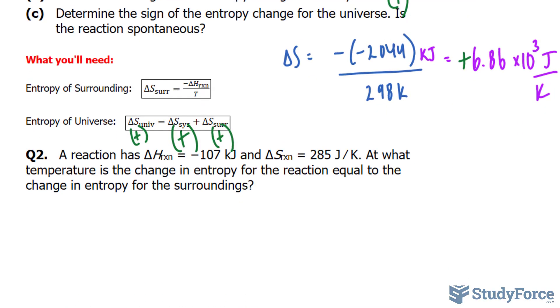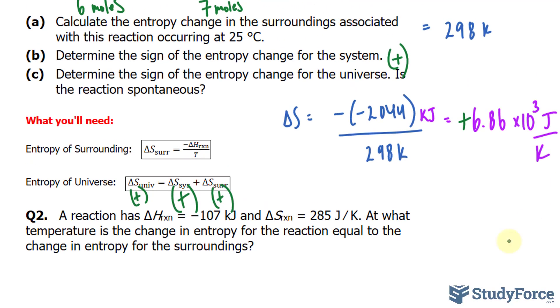Let's move on to question 2. This time, the reaction has a delta H, or a change in enthalpy, that is negative 107 kilojoules. And delta S of the reaction is 285 joules per Kelvin.